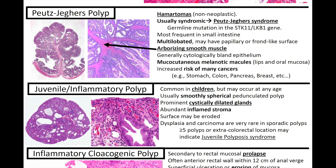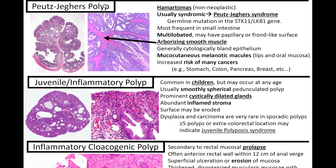Moving on, we've got a Peutz-Jeghers polyp. This is a hamartomatous non-neoplastic polyp, usually syndromic, associated with Peutz-Jeghers syndrome with a germline mutation in the STK11 or LKB1 gene. They're most frequently found in the small intestine, can be multilobulated with papillary or frond-like surfaces, and have arborizing smooth muscle — very classically tested. There's cytologically bland epithelium and mucocutaneous melanotic macules can be involved. Could occur in a pediatric patient but also in adults.